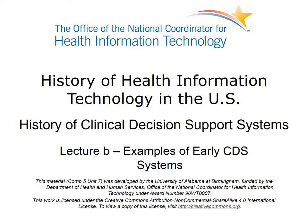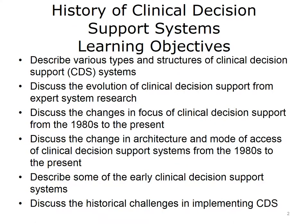This lecture illustrates some examples of the types of early CDS. The objectives for this unit, History of Clinical Decision Support Systems, are to describe various types and structures of clinical decision support, or CDS, systems. Discuss the evolution of clinical decision support from expert system research, and the changes in focus from the 1980s to the present, as well as changes in architecture and mode of access. Describe some of the early clinical decision support systems and discuss the historical challenges in implementing CDS.